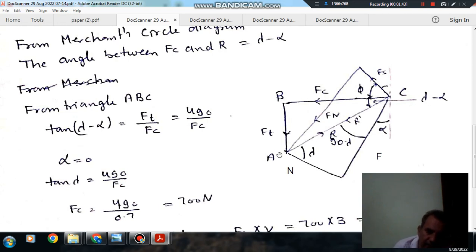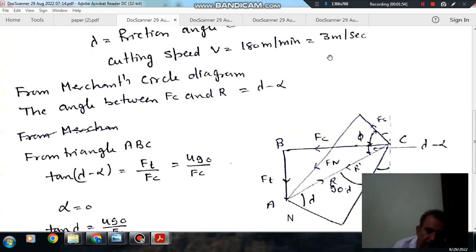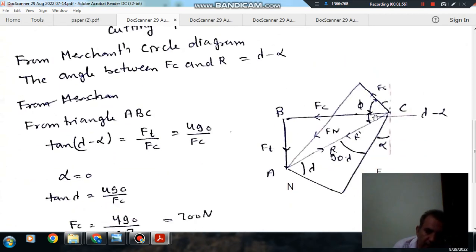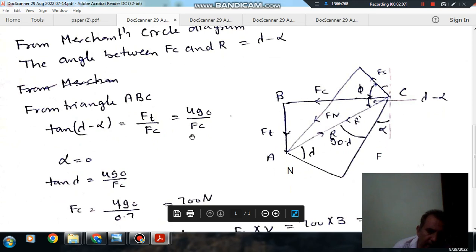In this triangle ABC, we have Ft and this angle lambda minus alpha. So lambda is known and alpha is known. Alpha is 0, lambda is 35 degrees. So this angle is 35 degrees. So now for this angle we have tan of lambda minus alpha. It will be equal to, this is perpendicular to this is base, Ft by Fc. So that is 490 by Fc.